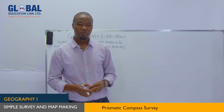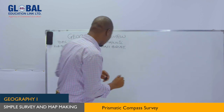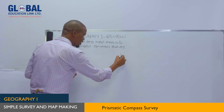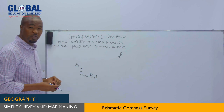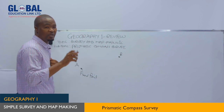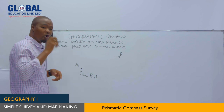Prismatic compass survey is a type of survey method which entails determining the position of an object by measuring its angle to or from a fixed point. For example, if we have point A as a fixed point, we can determine the position of point B from point A by measuring the angle of point B either from point A or to point A.